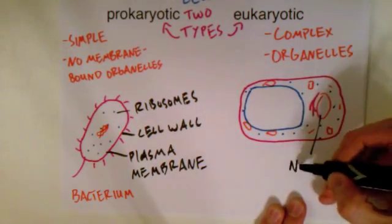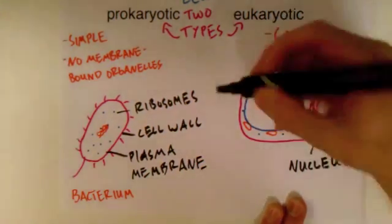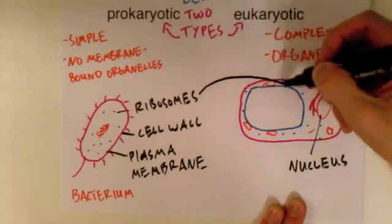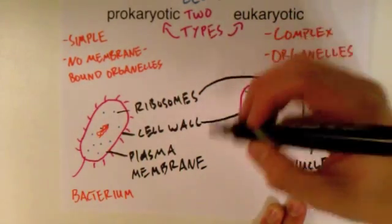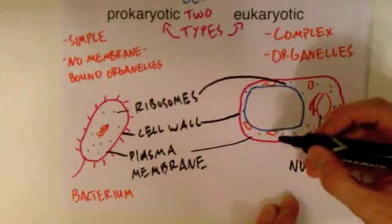In the eukaryote, we have a nucleus. Ribosomes are also found, as well as a cell wall and a plasma membrane in this particular type of cell.